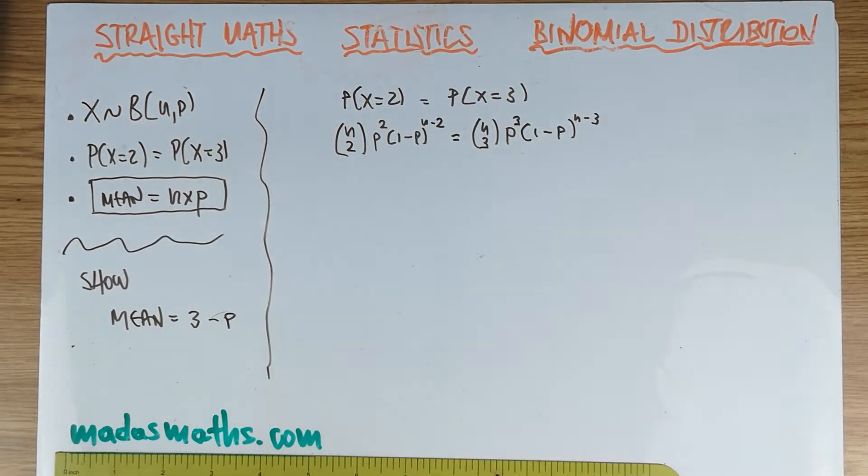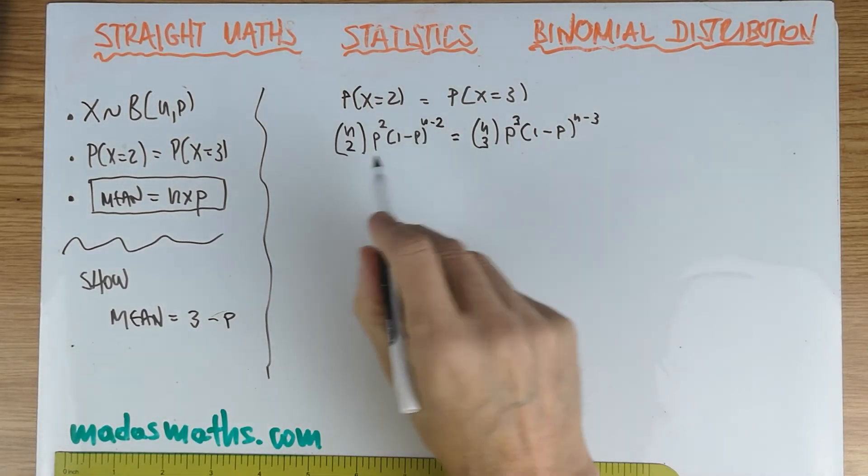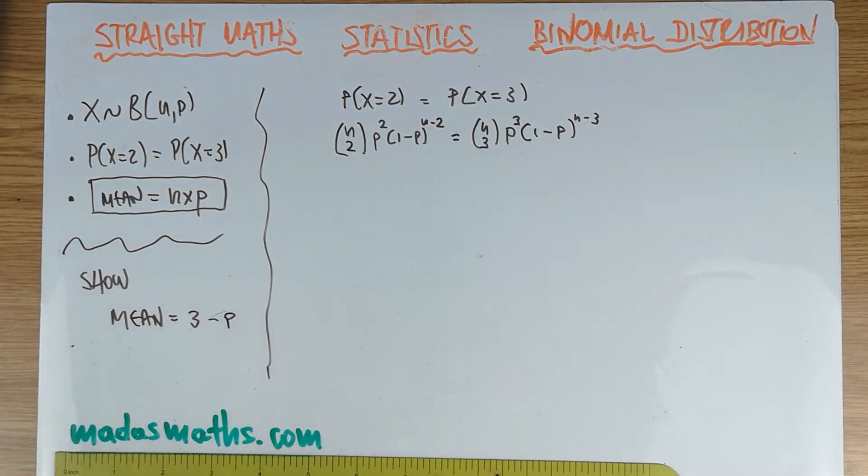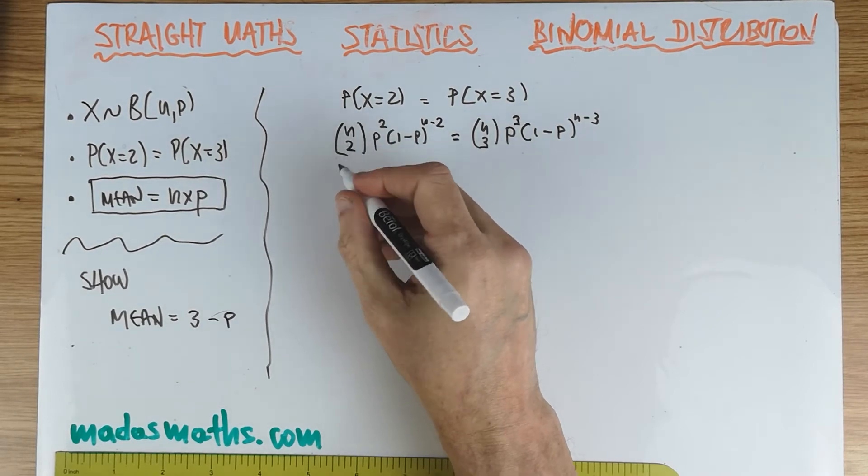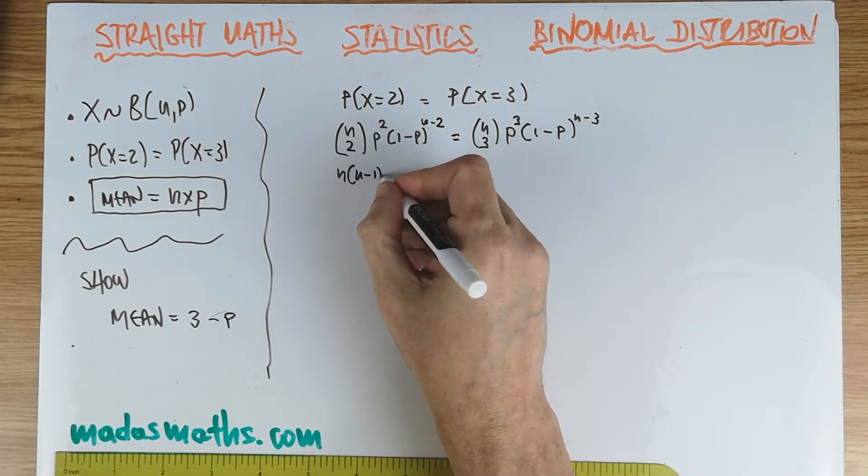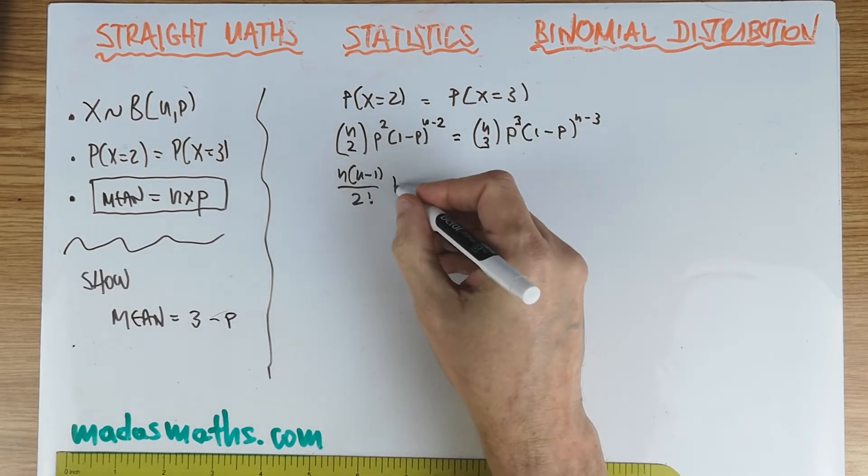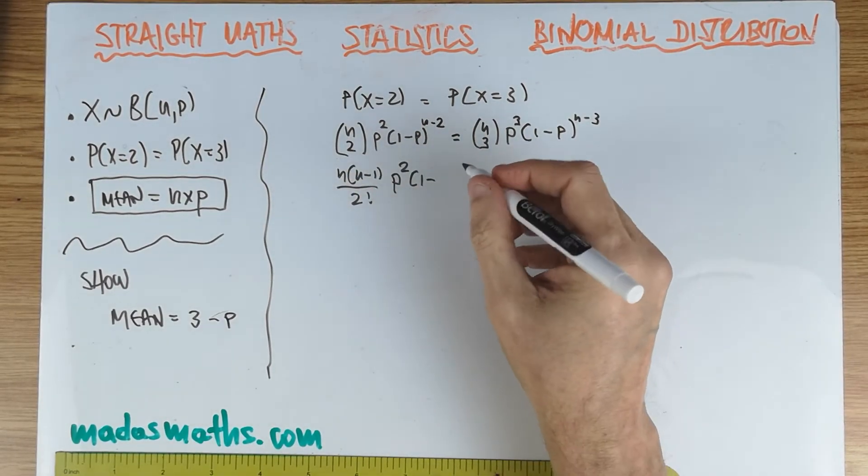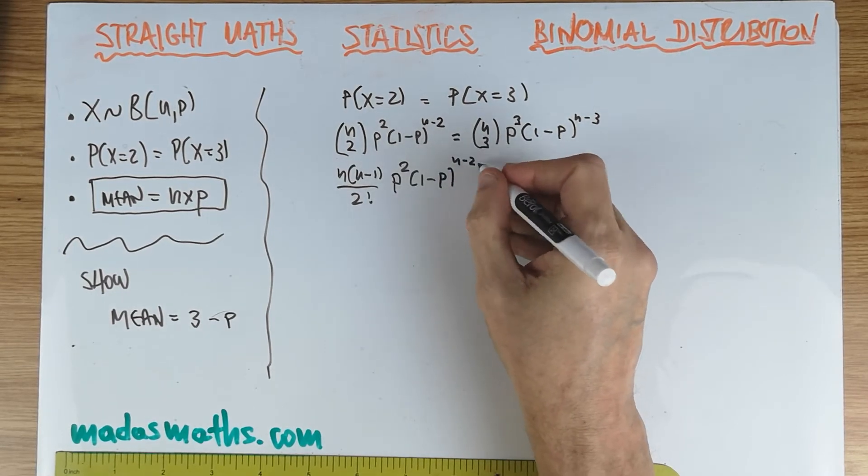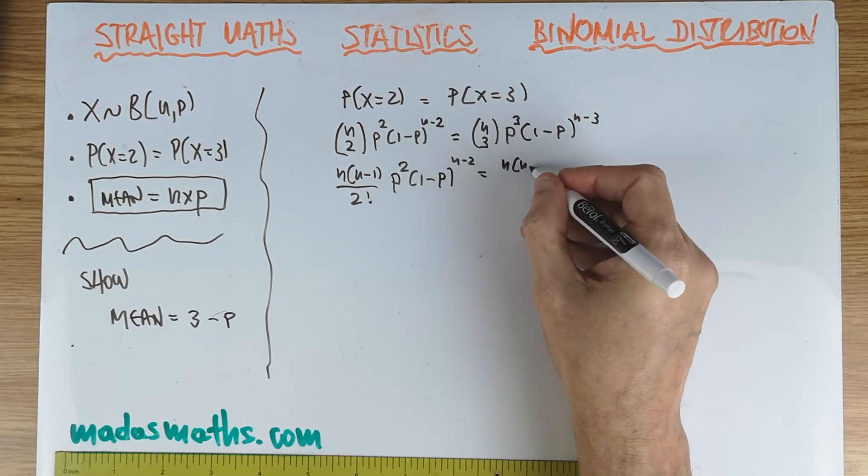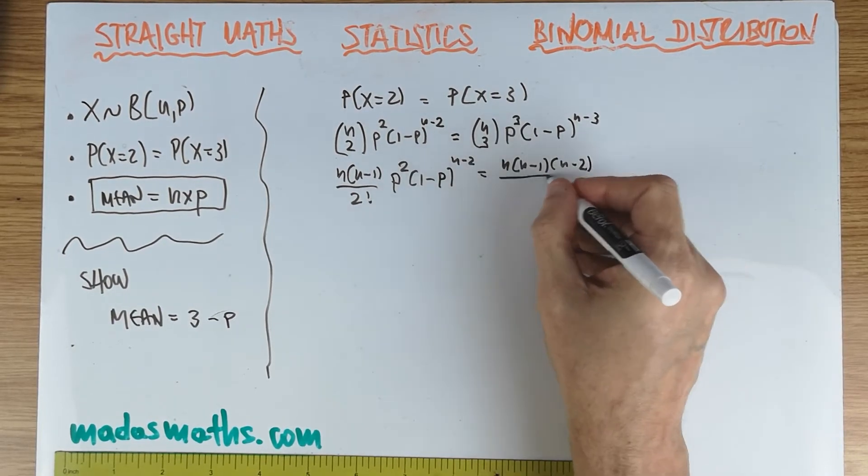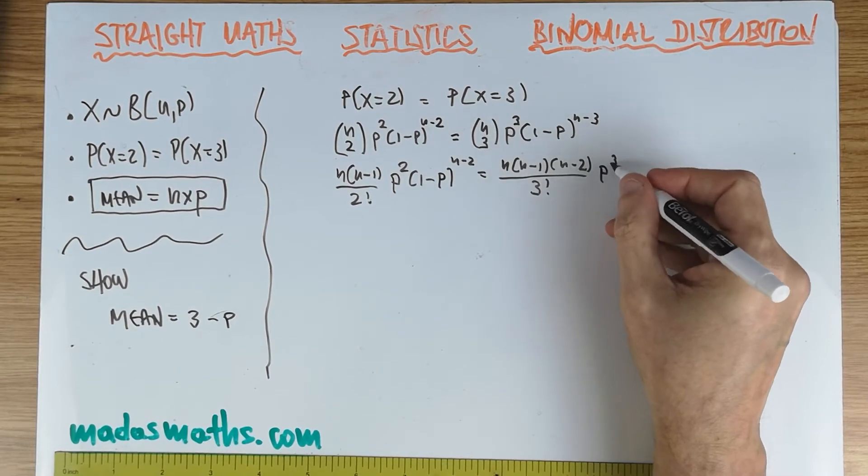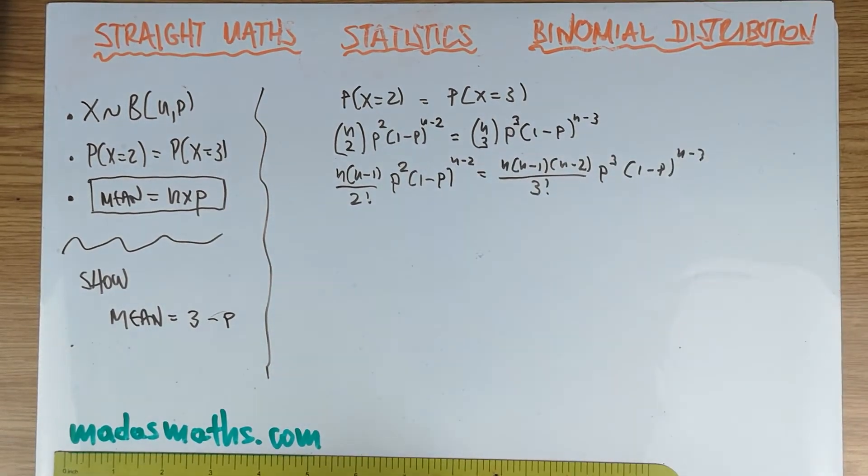So this is now the first line, and we need to be thinking about what to do next. We need to expand these binomial coefficients. You need to know what they stand for. This is now what each of them are: n choose two is n times n minus one over two factorial, that's this bit here. The rest I'm merely copying it. And the same thing, this is going to be n times n minus one times n minus two over three factorial, and then we go p cubed, one minus p to the n minus three.